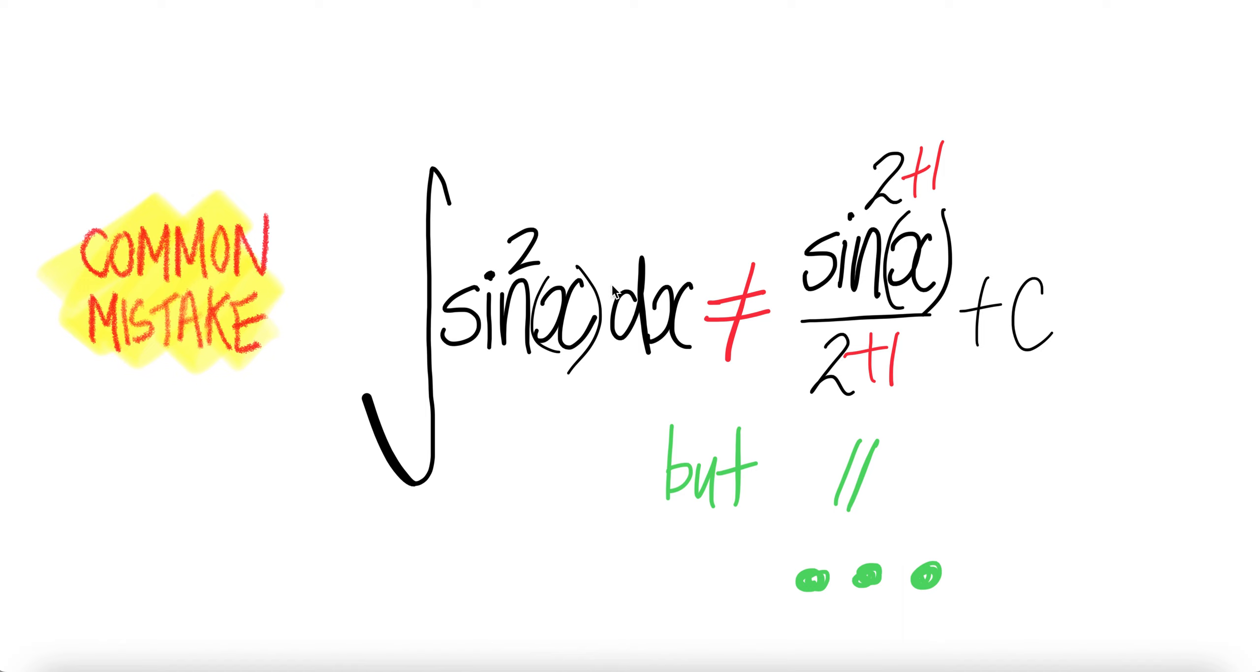Recall, we are taking the derivative integral with respect to x here, not with respect to sin x. If it is with respect to sin x, yes, this is equal to sin x 2 plus 1 over 2 plus 1 plus c. Done. See you.